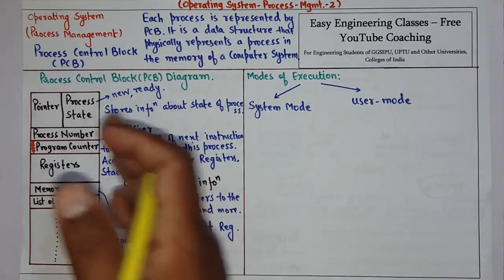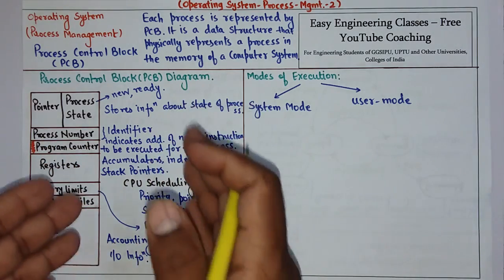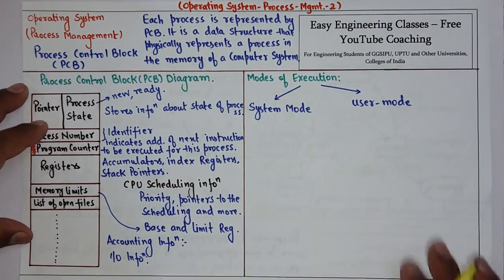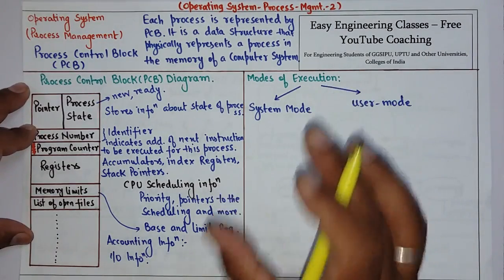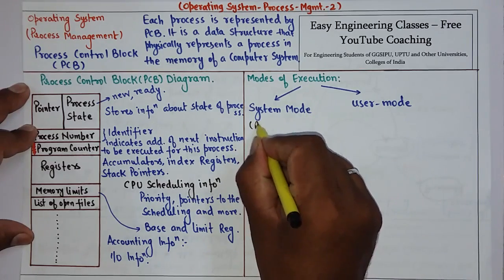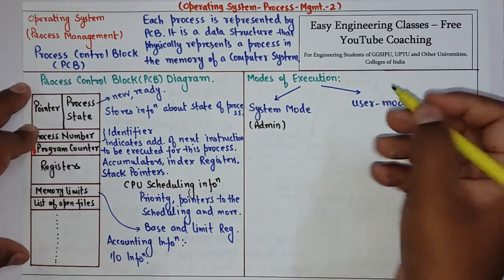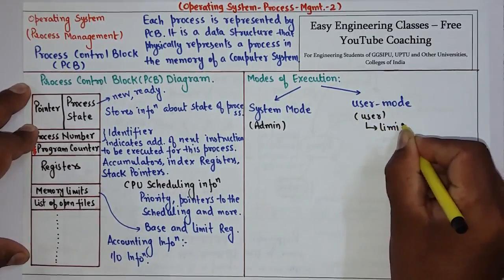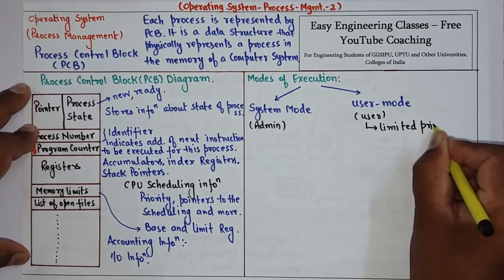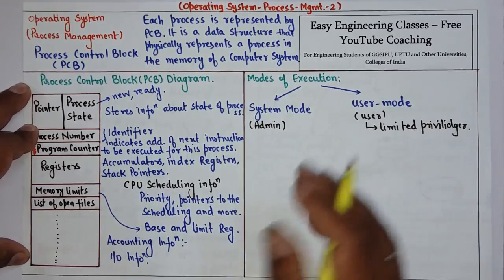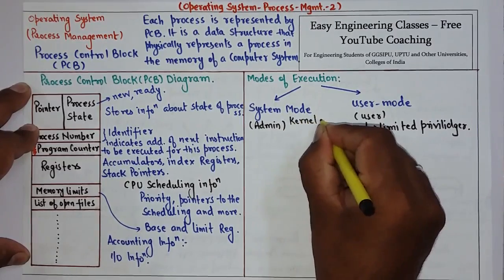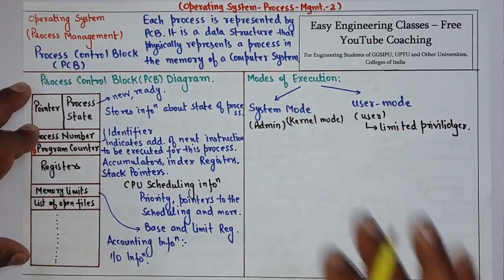So this is about the PCB, its different fields, and their functionality. Now, a process can be executed in two different modes: system mode and user mode. System mode is also known as kernel mode, and it contains all the privileges that an admin can enjoy. So if a question comes about what kernel mode is, you have to explain system mode.